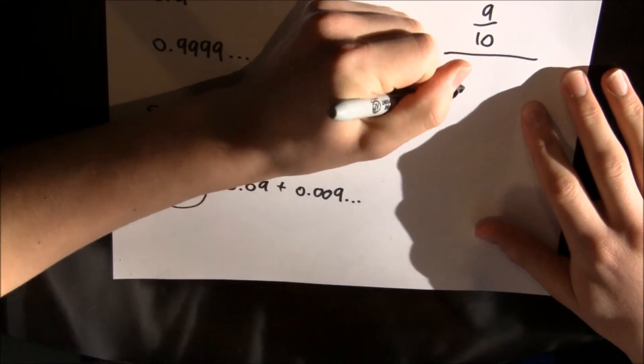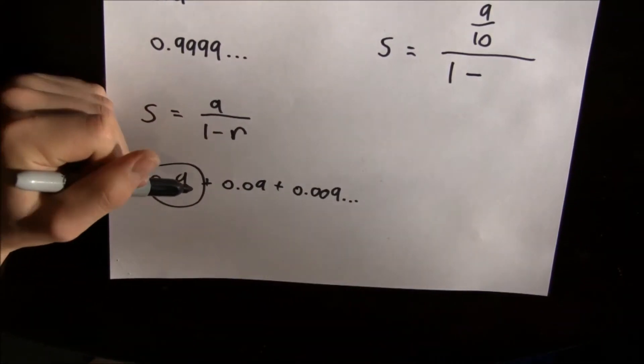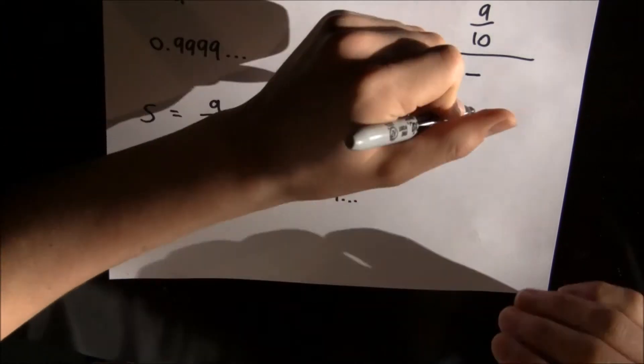...1 minus our ratio. And our ratio is 1 tenth, because 0.9 times 1 tenth equals 0.09, so 1 minus 1 tenth.